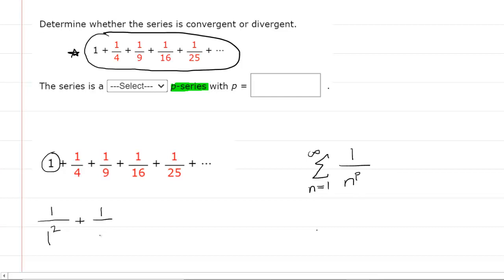For the next term, we have 1 fourth, but we're going to rewrite the 4 as 2 to the power of 2. For 1 ninth, we'll rewrite the 9 as 3 to the power of 2. And by now you probably see the pattern - 16 will be 4 to the power of 2 and 25 will be 5 to the power of 2, and on and on it goes.